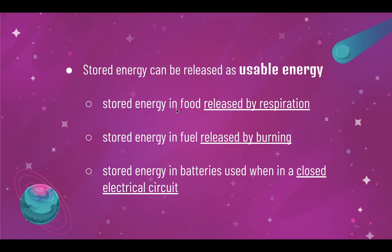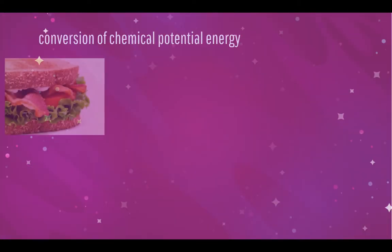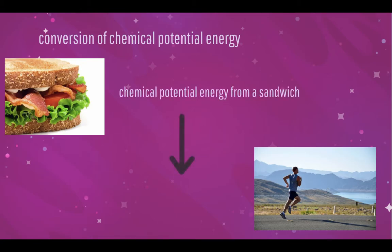The chemical potential energy in food can be released by respiration. The chemical potential energy in fuel can be released through burning. The chemical potential energy in a battery can be used when it is in a closed electrical circuit, hence converting to electrical energy. For instance, how do you think a jogger gets his energy from the sandwich he ate? The chemical potential energy from the sandwich is being converted to kinetic energy and heat energy of the jogger.